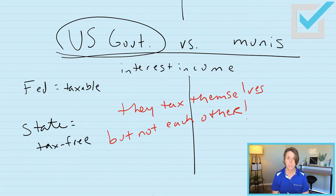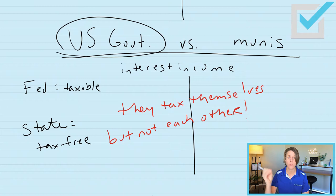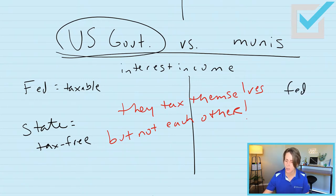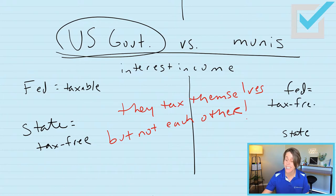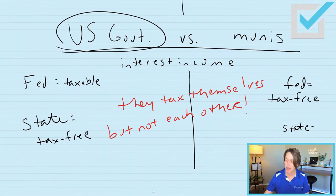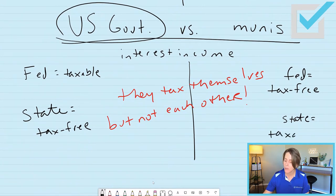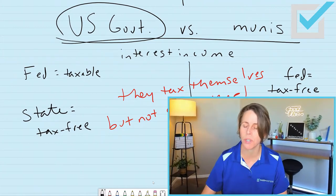'They tax themselves, but not each other.' When we're talking about municipal debt, municipal debt is issued by a state or lower taxing authority. We still have two places where taxes are owed: federal and at the state level. The interest income on a municipal bond is tax-free at the federal level, but taxable on your state income tax return.